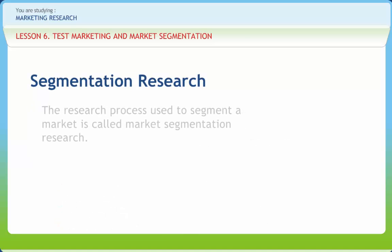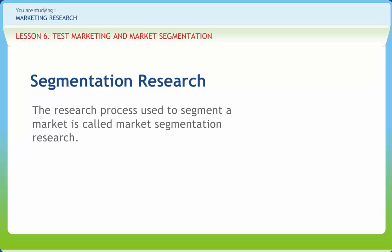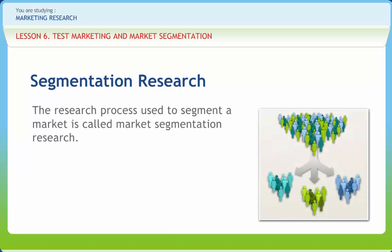The research process used to segment a market is called market segmentation research and consists of three steps: identifying market segments in terms of the characteristics of the consumers; investigating the differences between segments, usually on the basis of attitudes, lifestyles, perceptions, or benefits sought; and evaluating the long-term attractiveness of each segment.